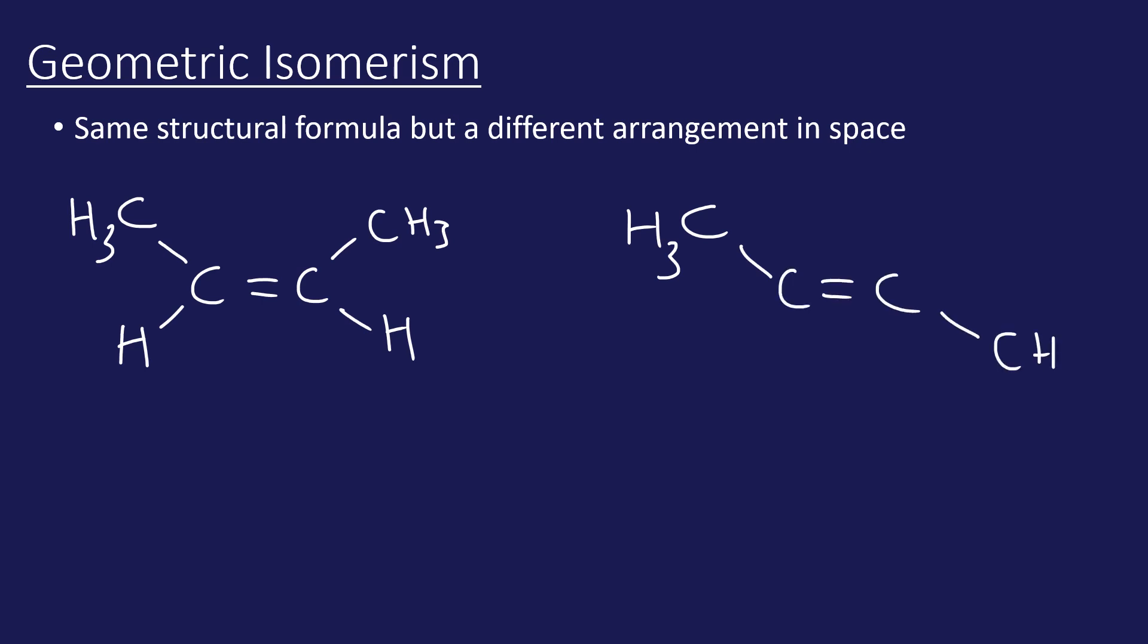However, you can see that those two methyl groups are on opposite sides. On the right-hand side, we have CH3 at the top and CH3 at the bottom. On the left-hand side, we have both CH3 groups at the top.